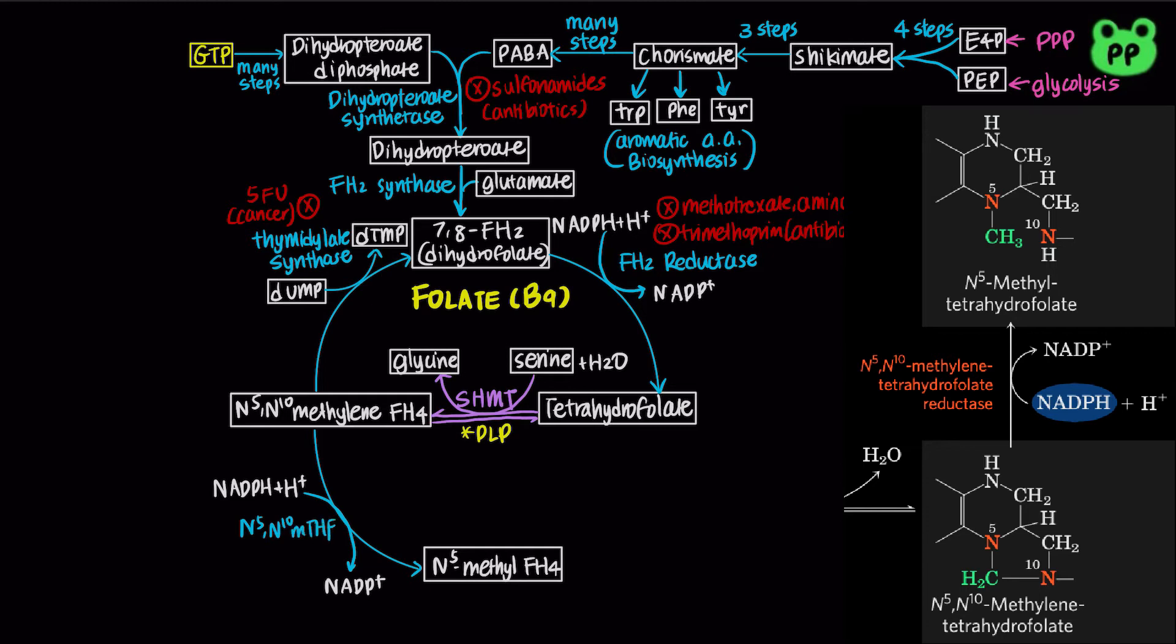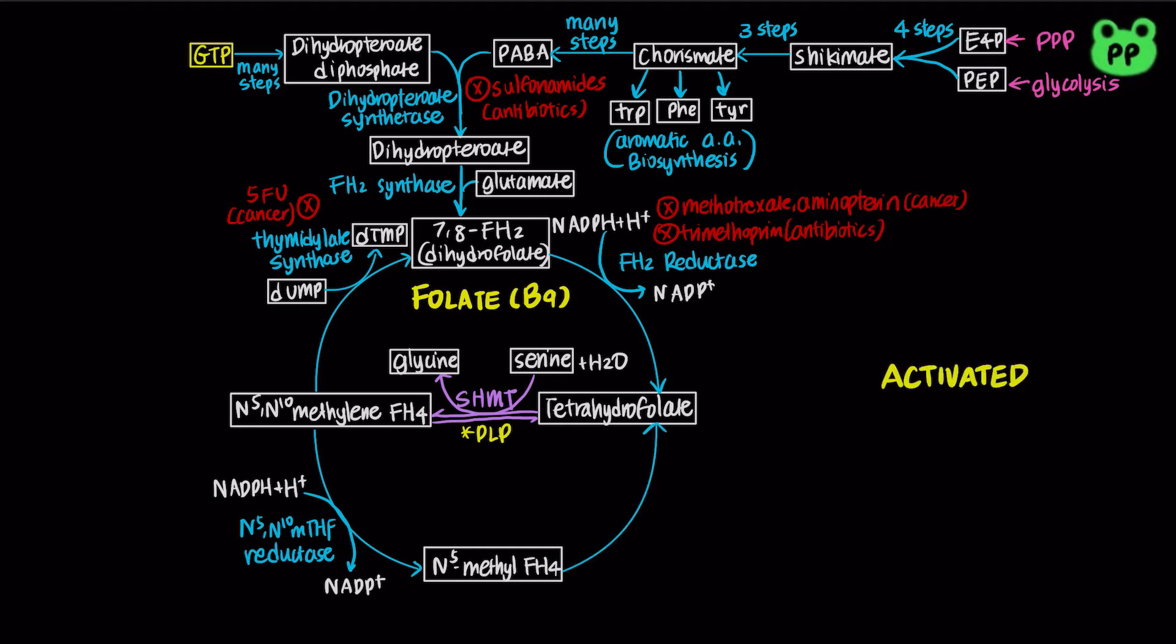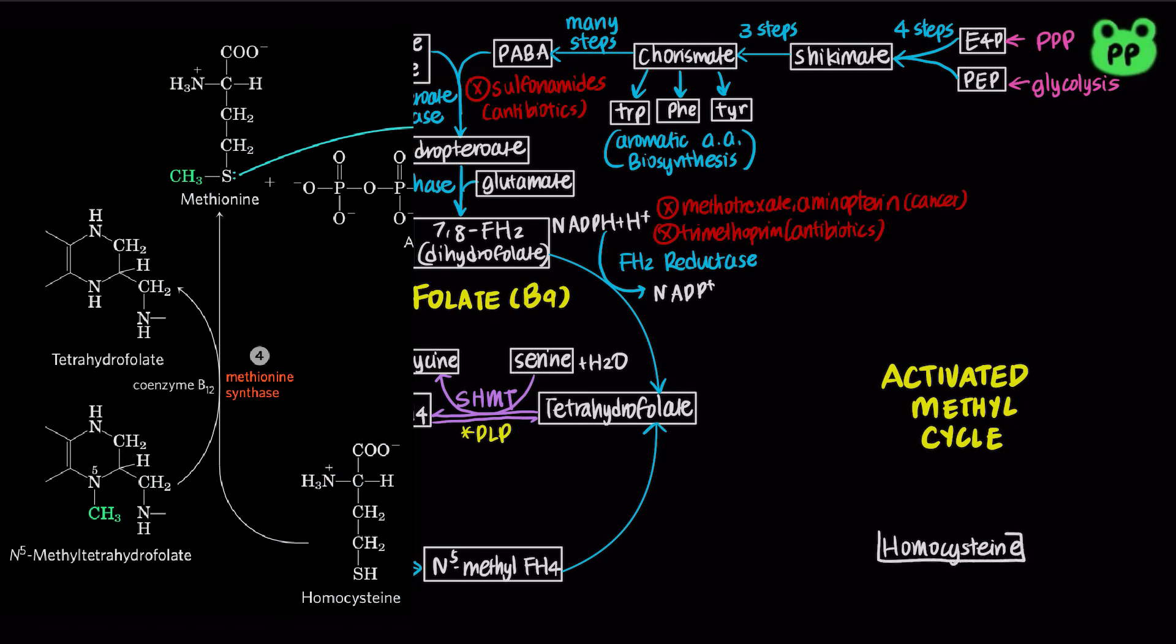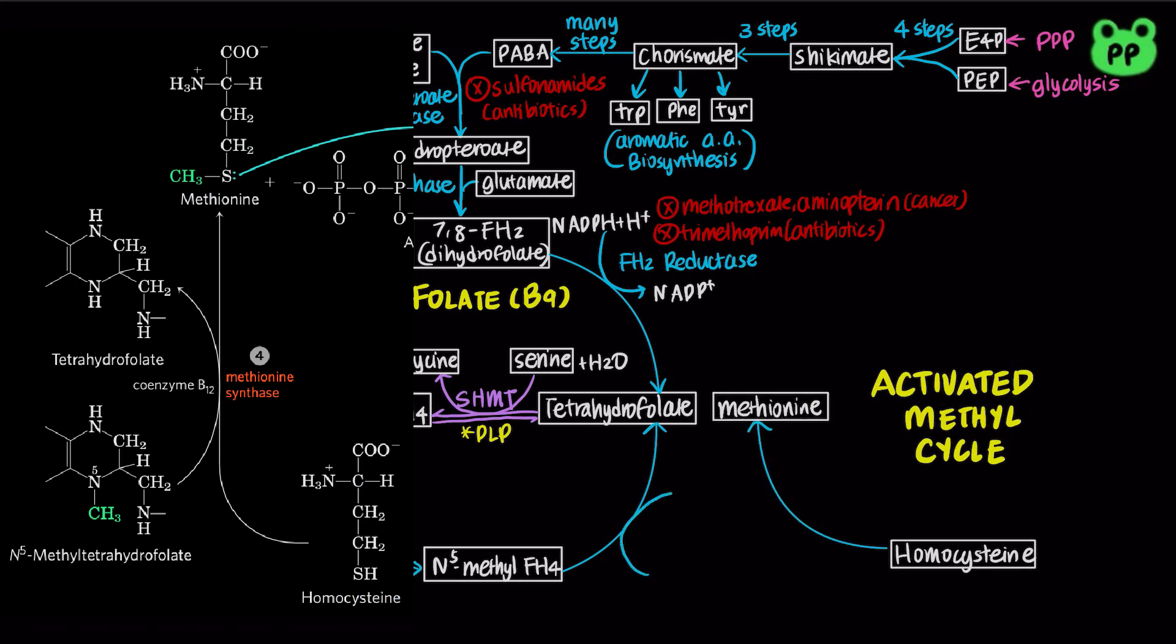Tetrahydrofolate is not the primary methyl donor in the majority of methylation reactions, which are catalyzed by the activated methyl cycle instead. First, methionine synthase converts homocysteine to methionine. In this reaction, the methyl group is first transferred from N5-methyltetrahydrofolate to cobalamin derived from vitamin B12, forming tetrahydrofolate and methylcobalamin, which donates the methyl group to homocysteine producing methionine.